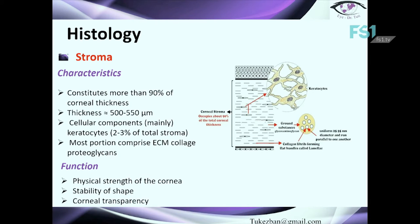The next layer is the stroma — the main part of the cornea — which constitutes 90% of the cornea. The thickness varies between 500 and 550 microns. The cellular components are mainly keratocytes, and it also consists of collagen fibers and proteoglycan. The main functions are physical strength of the cornea, stability of shape, and corneal transparency.